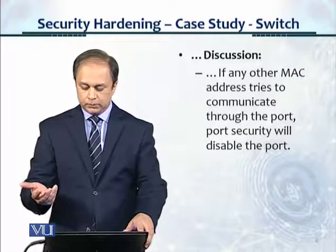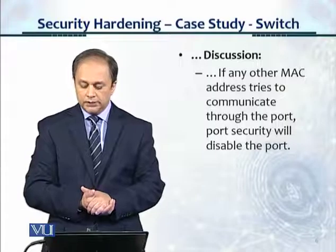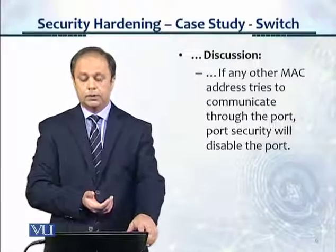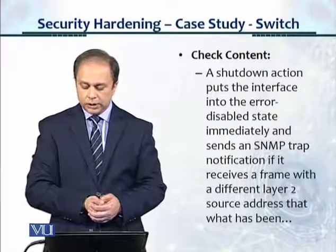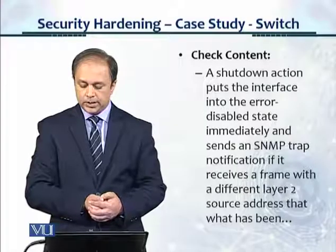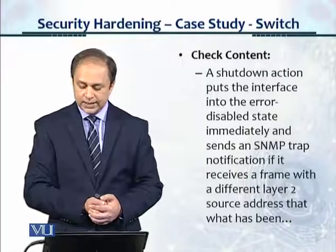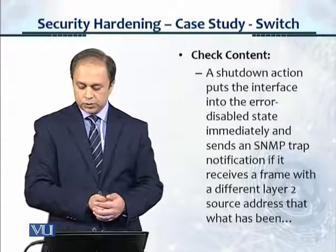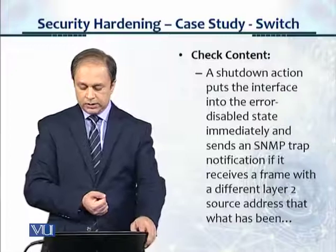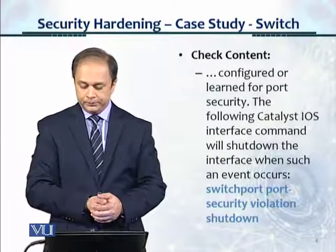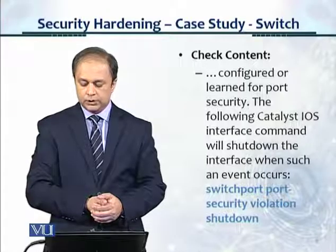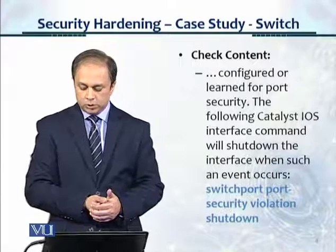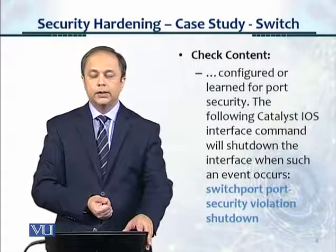The discussion continues: if any other MAC address tries to communicate through the port, port security will disable the port. Check content: a shutdown action puts the interface into the error-disabled state immediately and sends an SNMP trap notification if it receives a frame with a different layer 2 source address than what has been configured or learned for port security. The following Catalyst IOS interface command will shut down the interface when such an event occurs: switchport port-security violation shutdown.